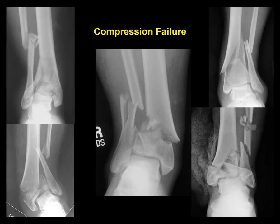In a compression failure, if there is a medial injury, it's not that big vertical fracture — it's more horizontal or short oblique. And the fibula is much more comminuted. On the medial side, the fracture is more of a horizontal or short oblique. So this represents compression failure of the fibula in this mechanism.